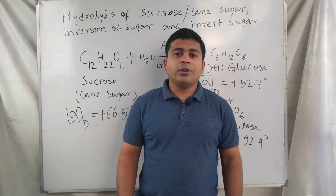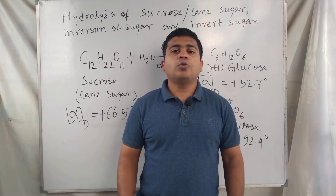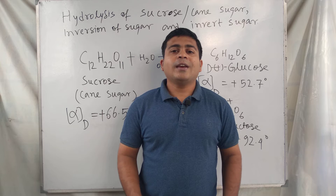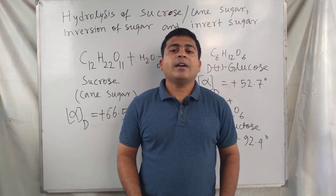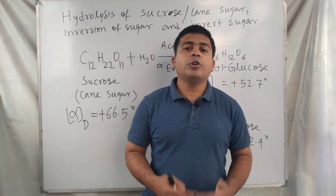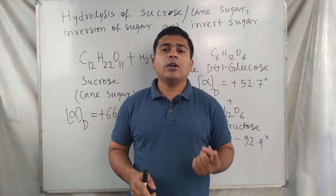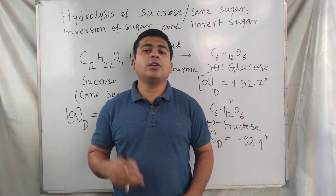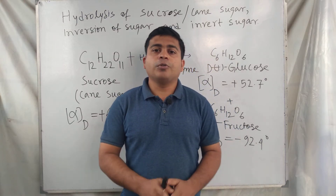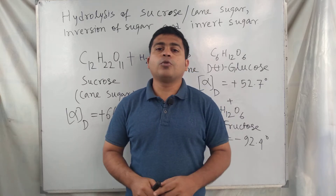For sucrose or cane sugar, what happens on hydrolysis — sucrose is a disaccharide carbohydrate, which means on hydrolysis sucrose produces two different types of molecules: one is glucose and another is fructose. So on hydrolysis of sucrose or cane sugar, two products are formed: glucose and fructose.